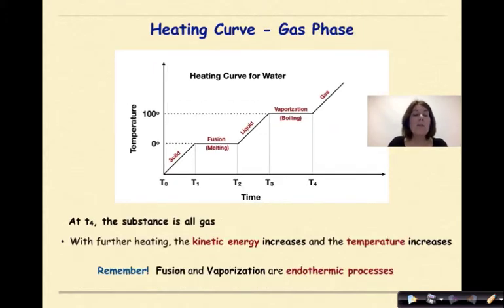At T4, the substance is all gas. With further heating, the kinetic energy increases and the temperature will ultimately increase. Remember, fusion and vaporization are endothermic processes.